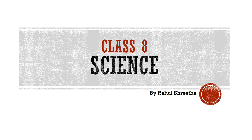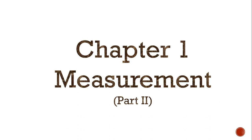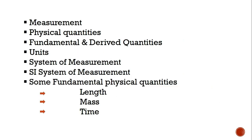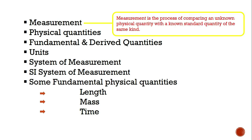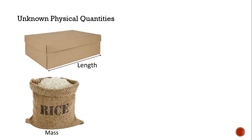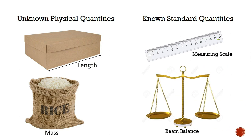Hello everyone, this is Rahul Sresht and I am here to present the second part of the measurement chapter for class 8. Last time we read about measurement and understood that it is a comparison of an unknown physical quantity with a known standard quantity of the same kind. In our previous examples, the known physical quantities were the length of this box and the mass of sugar, while the standard quantities used to measure them were the measuring scale and this beam balance.